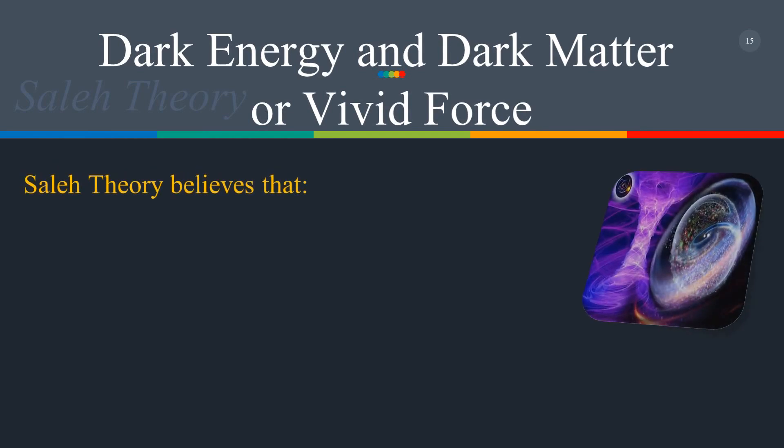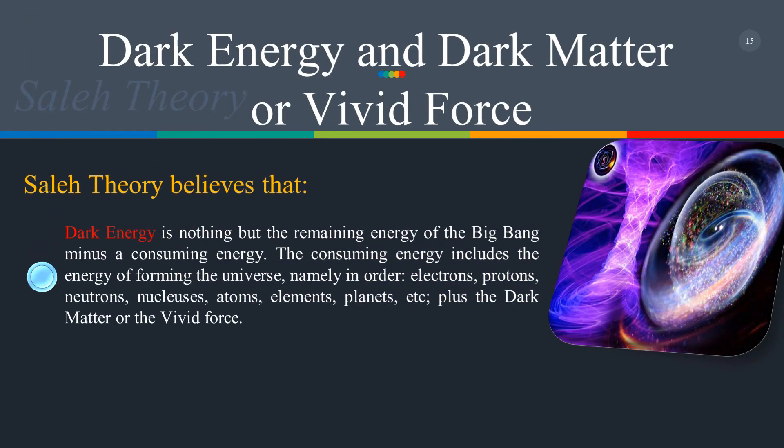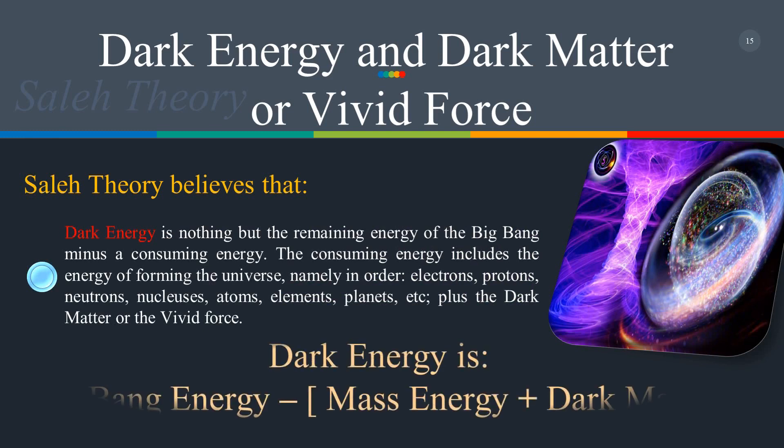Salih theory believes that dark energy is nothing but the remaining energy of the Big Bang minus the consuming energy. The consuming energy includes the energy of forming the universe — electrons, protons, neutrons, nuclei, atoms, elements, planets, etc. — plus the dark matter or vivid force. Therefore: dark energy = Big Bang energy − mass energy − dark matter.